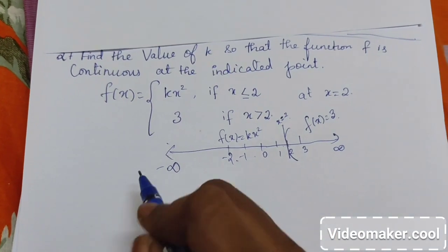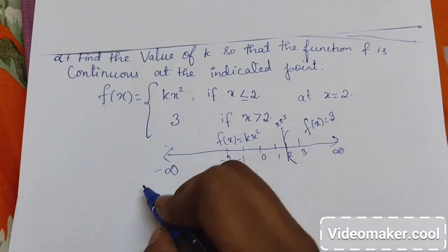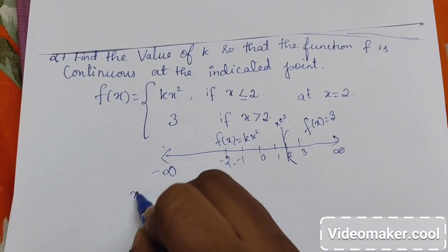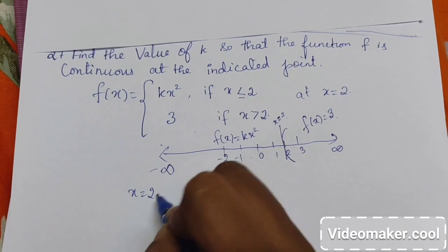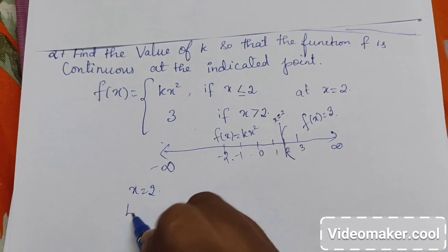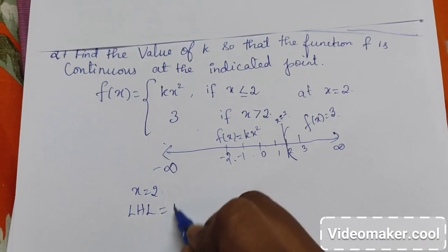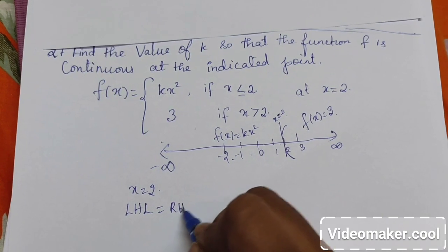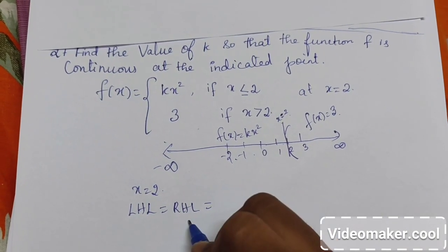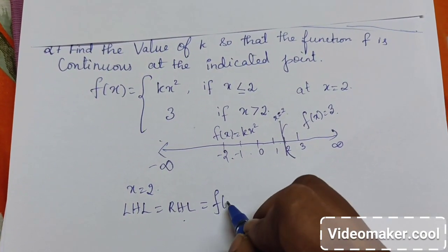Now, to say the function is continuous at 2, at x equal to 2, we have to get left hand limit equal to right hand limit, and the limit is equal to the functional value.